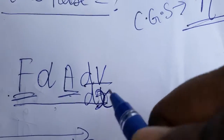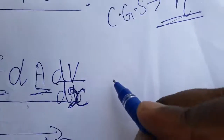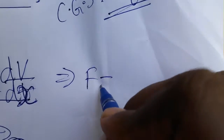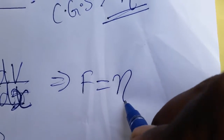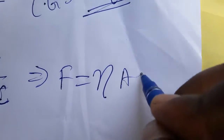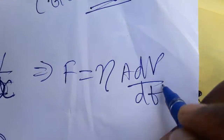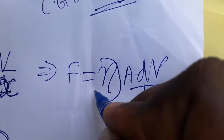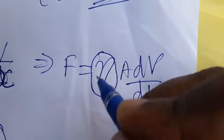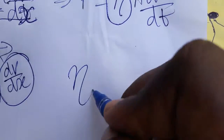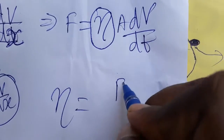The velocity gradient is dv/dx. When we write the equation, F is equal to eta times A times dv/dx. Eta is the proportionality constant here, and it is called the coefficient of viscosity.